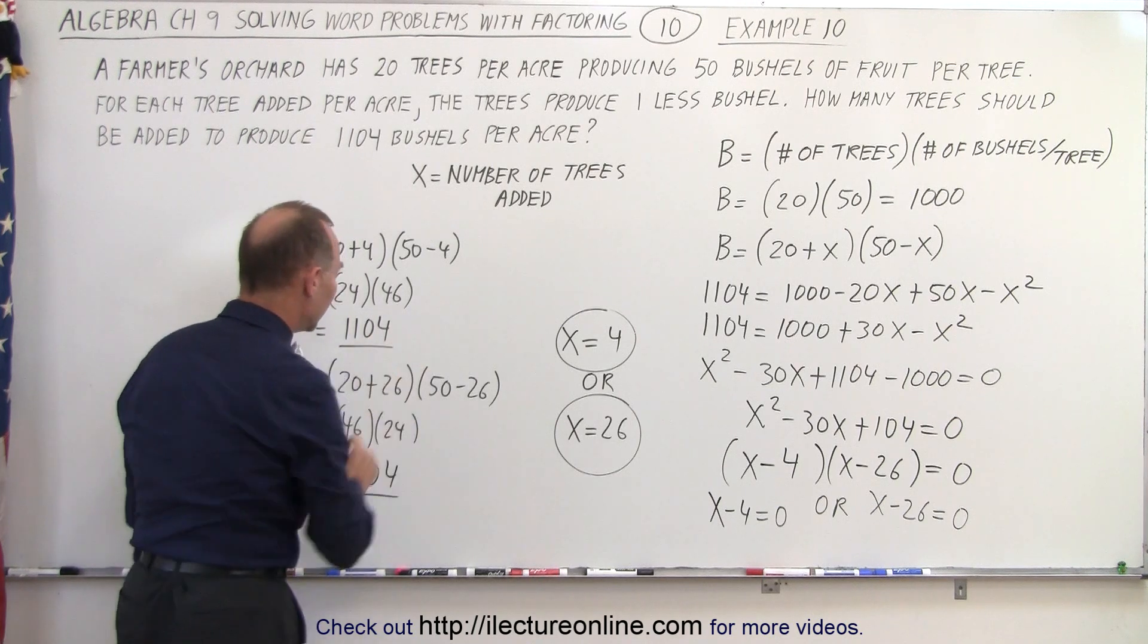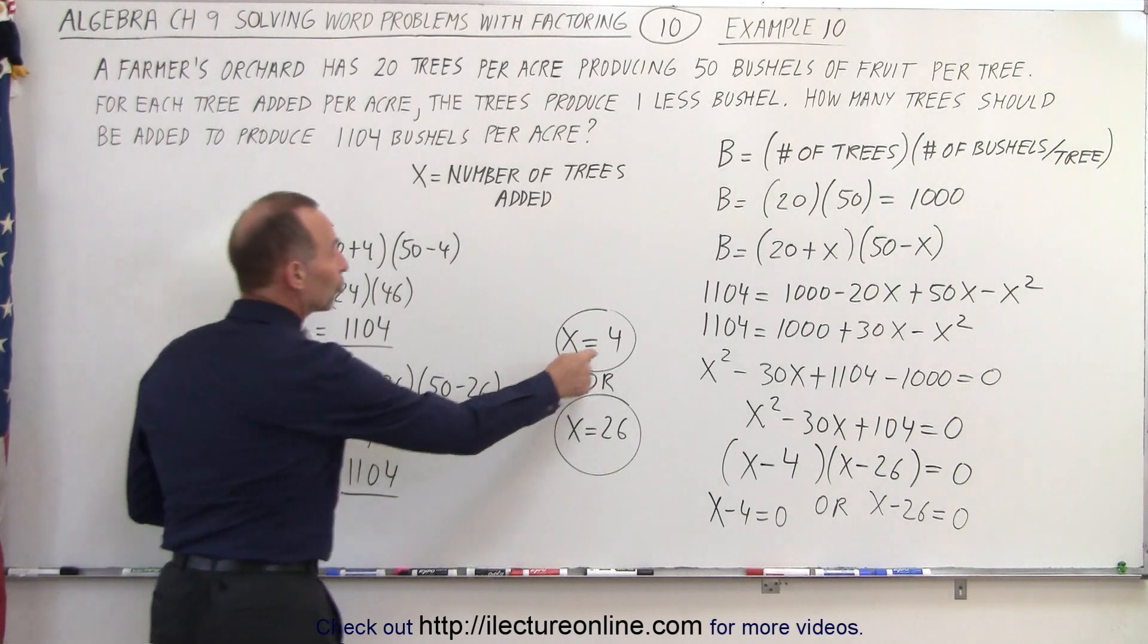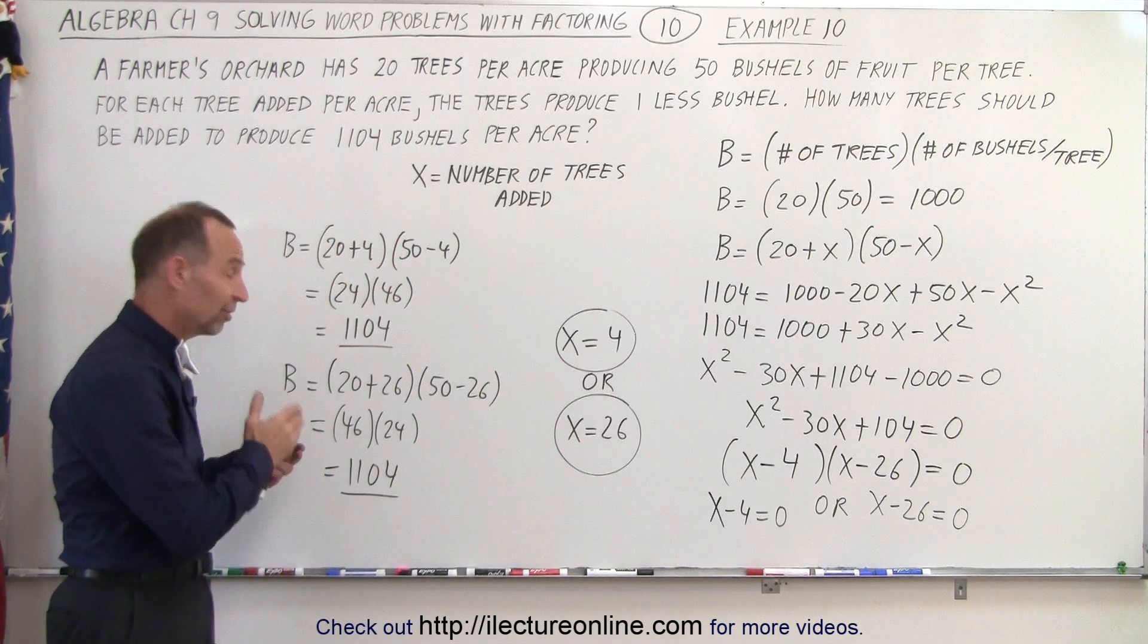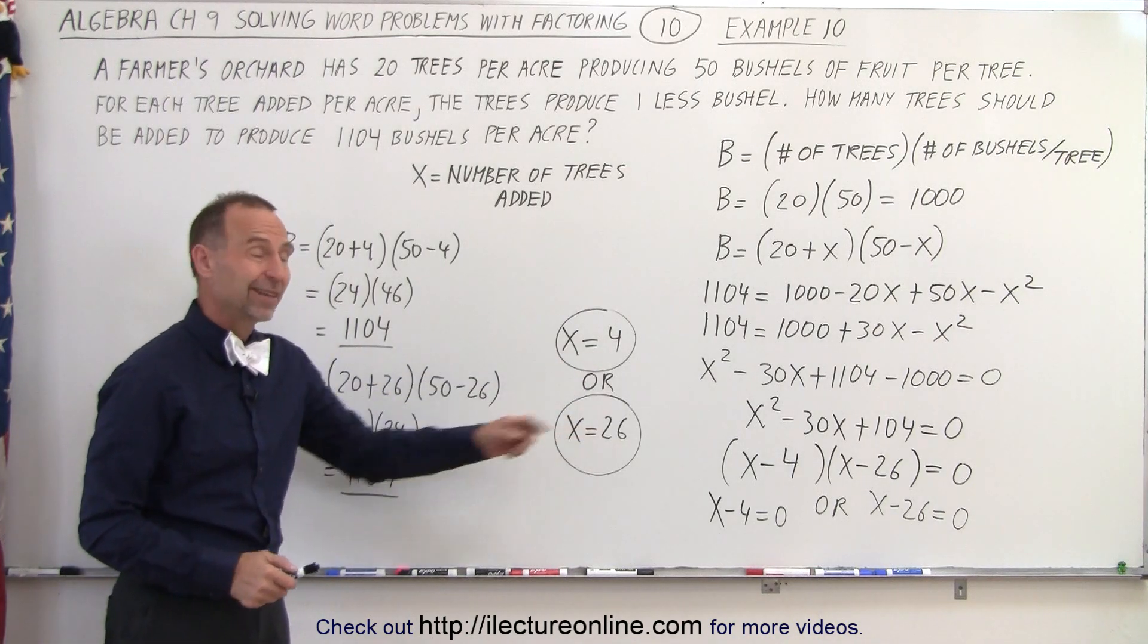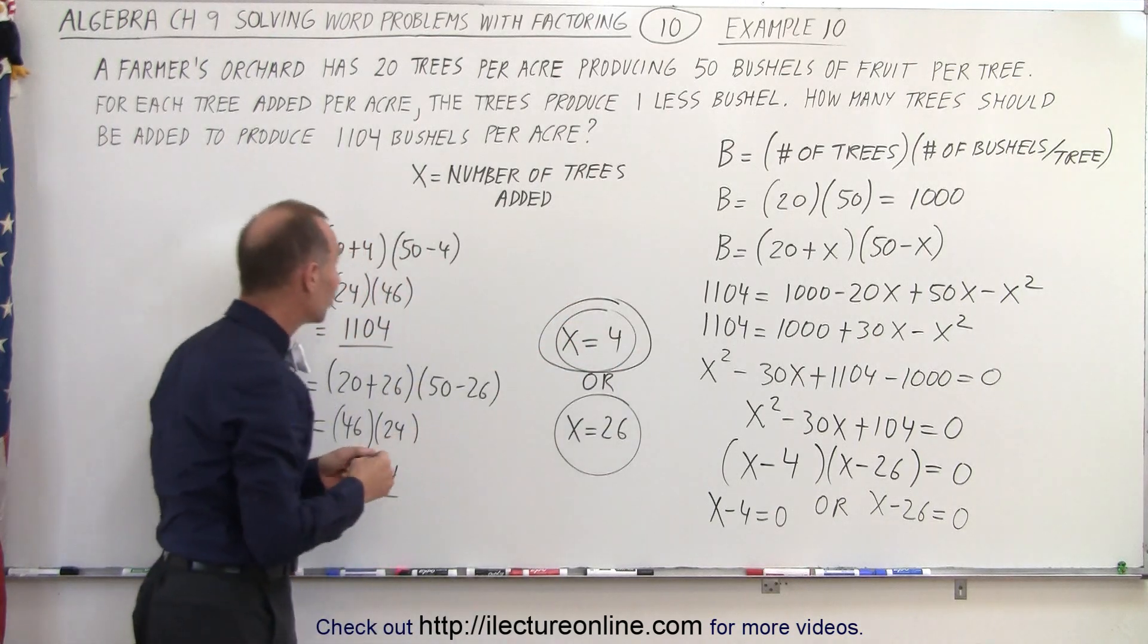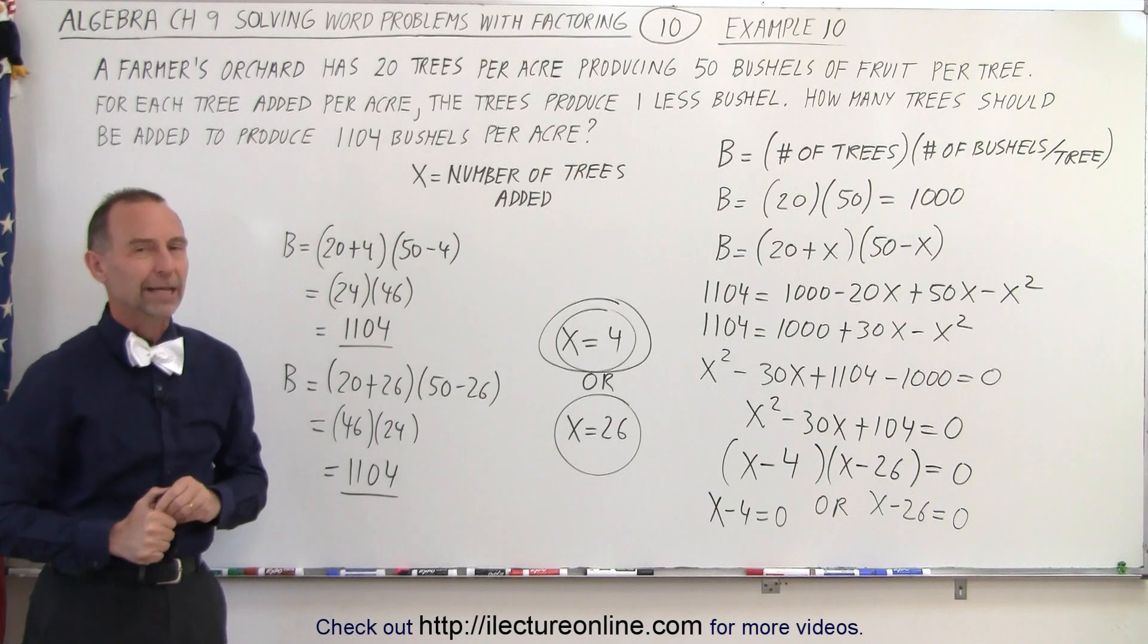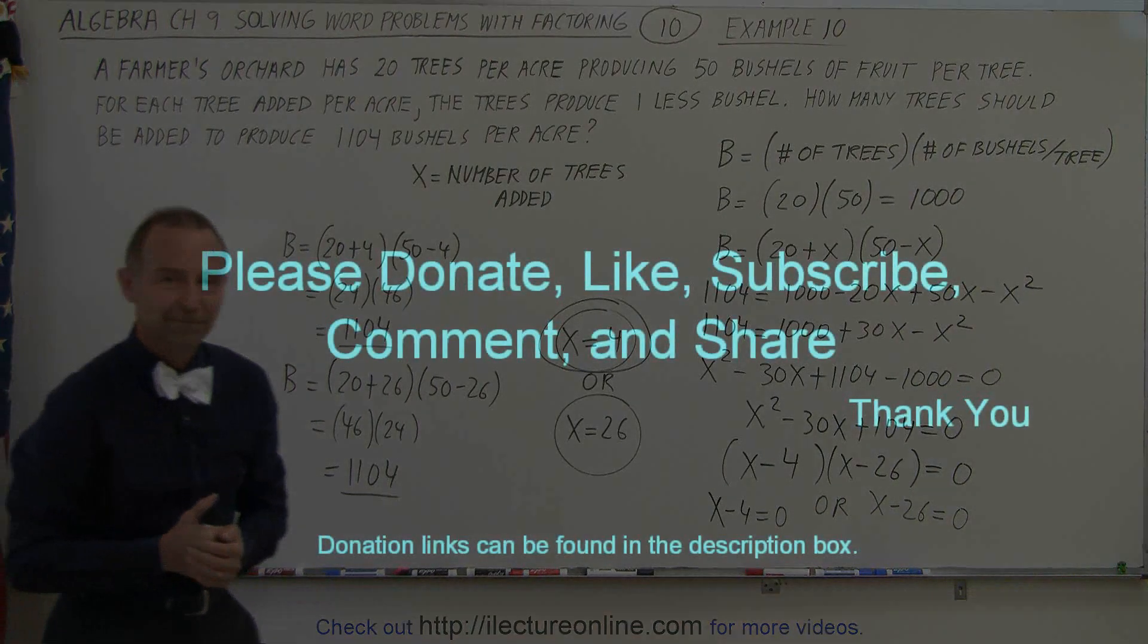So either way, we'll produce 1,104 bushels. Either by adding four trees or by adding 26 trees. Now, if you're going to produce the same number of bushels, and you only need to add four trees instead of 26, I would prefer this solution. So I would recommend the farmer, if he wants to produce 1,104 bushels, to add four trees per acre. And that is how it's done.